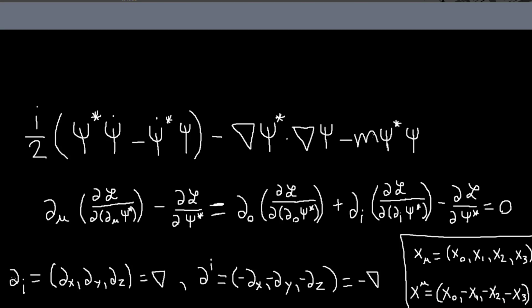So our derivative operators, when you have a lower i, that will mean partial_x, partial_y, partial_z, or I should write it as partial_1, partial_2, partial_3. That's the gradient. But partial with the i up top, that's going to be minus partial_x, partial_y, partial_z, or minus gradient. Using that, we can rewrite this.